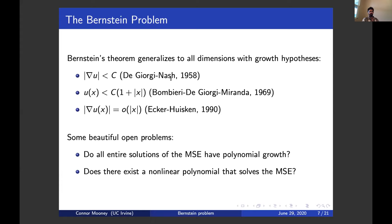Another related result: if a solution has linear growth, then it's a linear function — due to a very deep interior gradient estimate of Bombieri, De Giorgi, and Miranda from 1969. This result also plays a central role in Bombieri, De Giorgi, and Giusti's construction. The best result I know of in terms of controlled growth Bernstein theorems is due to Ecker and Huisken from 1990: if the gradient grows sub-linearly — corresponding to solutions with slightly slower than quadratic growth — then the solution has to be linear. This argument uses the Jacobi equation for the unit normal components along with Simon's inequality for the Laplacian of the second fundamental form.